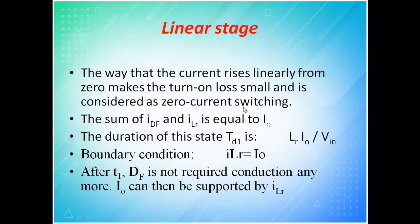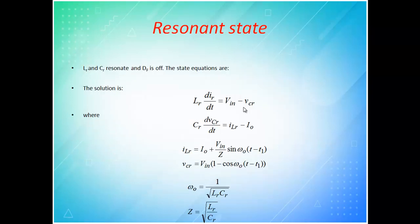In the resonance state, the characteristic impedance Z equals the square root of Lr/Cr, and the angular resonant frequency ωr equals 1/√(Lr×Cr). Under this condition, if the converter operates at the resonant frequency, either the voltage or current across the switch is brought to zero. For ZCS, the current is brought to zero; for ZVS, the voltage is brought to zero. The resonance duration alpha lies between π and 3π/2 for half wave, and between 3π/2 and 2π for full wave.